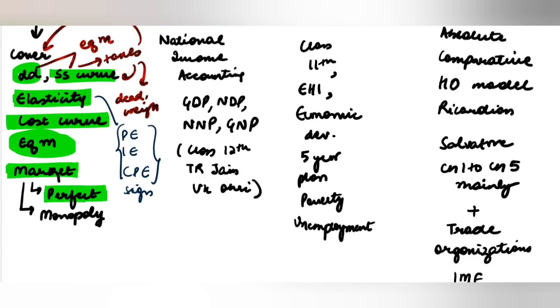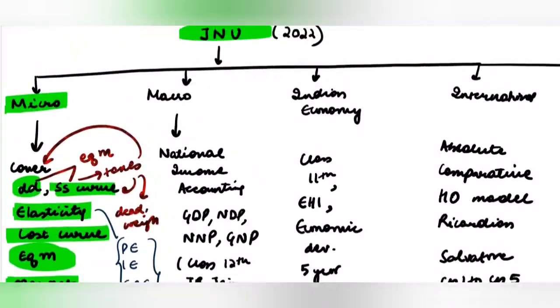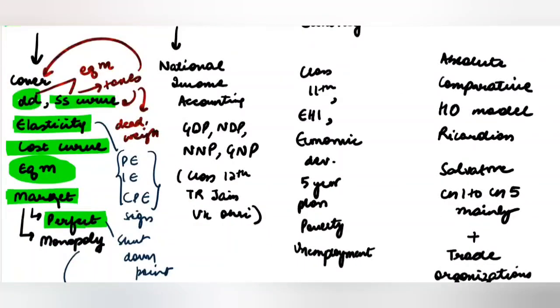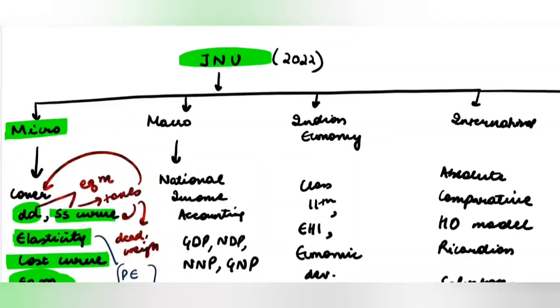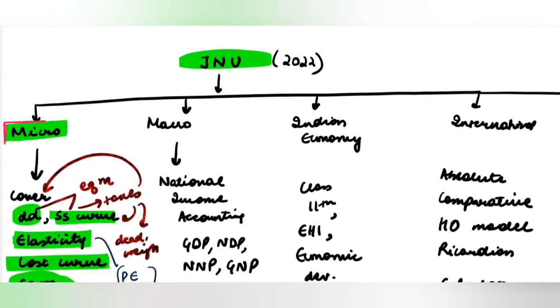Then you have to cover the market situations like perfect competition. What is the shutdown point? Monopoly, how to find equilibrium, monopolistic competition, oligopoly, etc. These are the main topics that you will see in any exam. If you cover these topics well, you will be able to crack JNU entrance exam microeconomics.